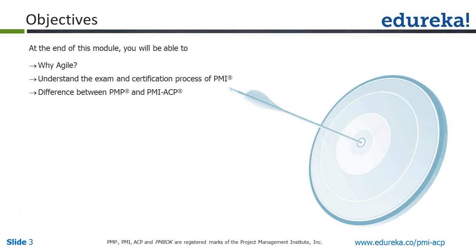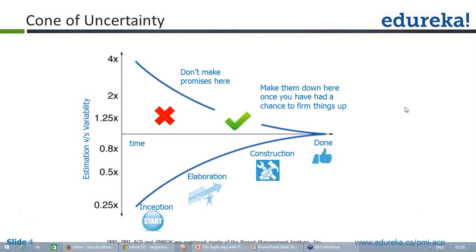These are the high-level topics I'll try to cover during this webinar in the next one hour. Those who are already PMP would have heard about the cone of uncertainty, but what I'm trying to achieve with this slide is: why do we need agile? We had a traditional waterfall model — what is the need of moving towards agile? Traditionally, when working on a waterfall model, projects used to last for years, and by the end we used to realize that whatever was created either does not meet requirements or the quality of the product is very low.